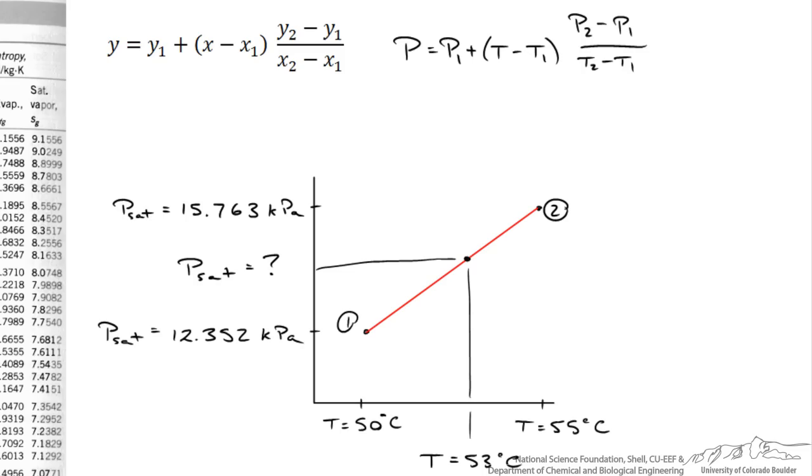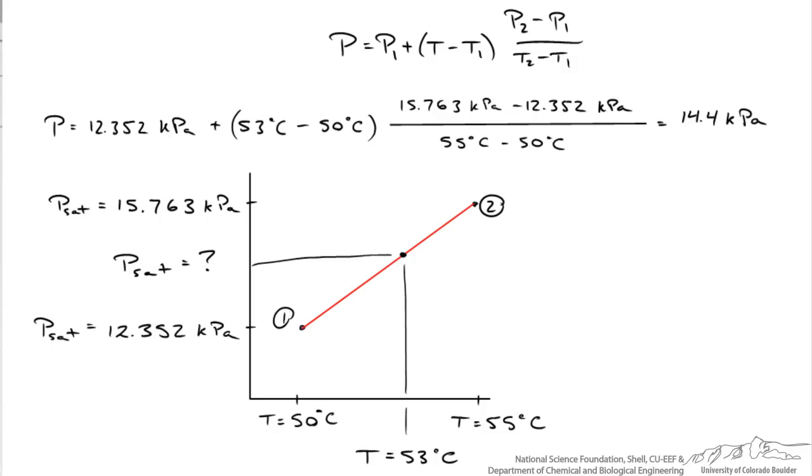So here is the analogous expression with pressures and temperatures. What I will do is I will plug in P1 and P2 and T1 and T2 and plug in a value for T and we will come up with the saturation pressure that we are interested in at a temperature of 53 degrees C. When I plug in numbers I get a pressure of 14.4 kilopascal. As a check that I did it right, it is between 12.35 and 15.8 kilopascal.